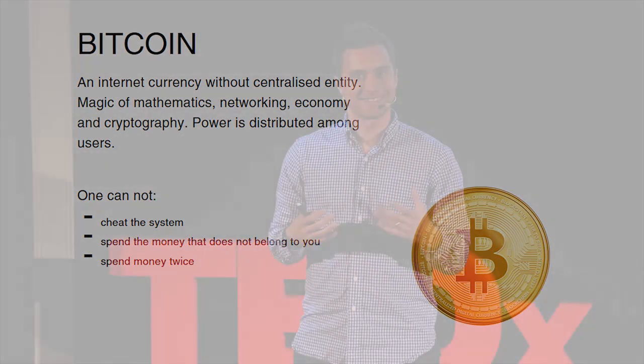And yet, there are some rules that are enforced. For example, I cannot spend money that I don't have, or I cannot spend my money twice. Nobody can just print extra Bitcoins — it's just impossible. The way it happens is there's a little bit of cryptography, a little bit of mathematics, a little bit of networking, and a little bit of economy, all put together in a way that power is distributed among all the users of the system.